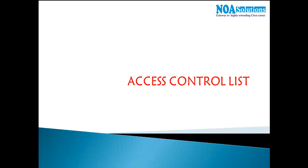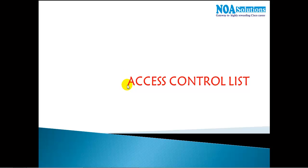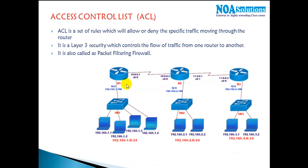In this section we'll see how to configure access control lists and what exactly they are, what they do, and the different types of ACLs. Access control list is a set of rules which will allow or deny the traffic moving through the router.